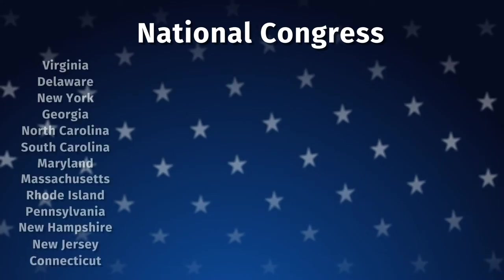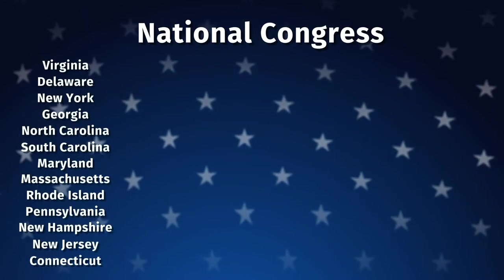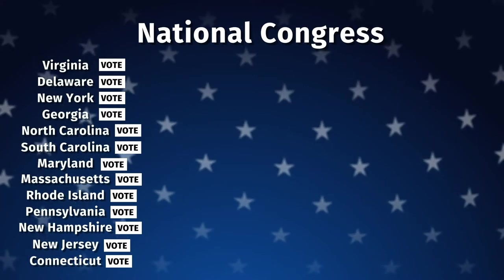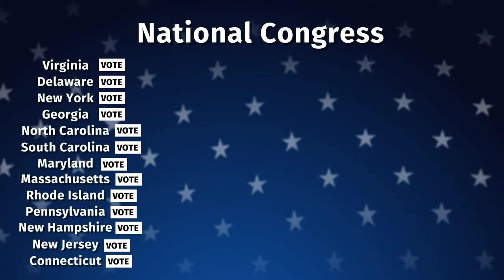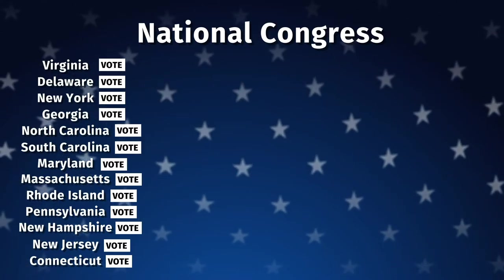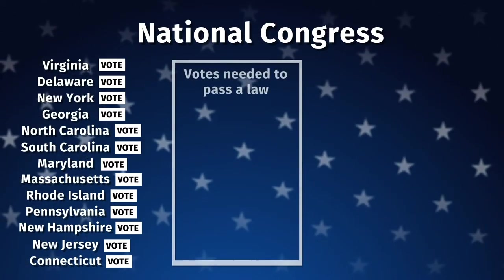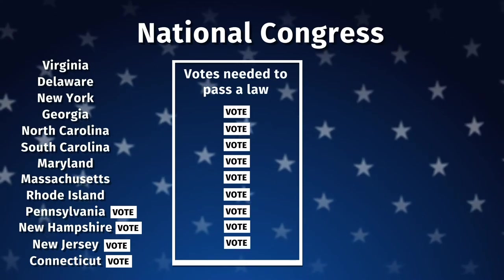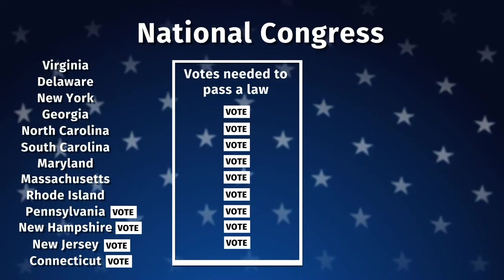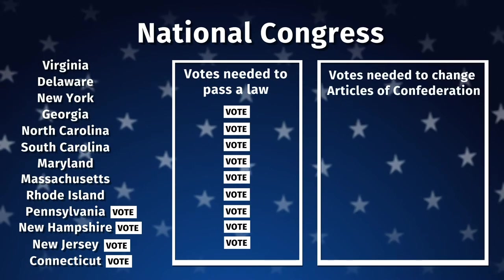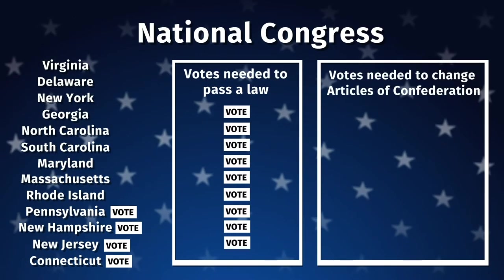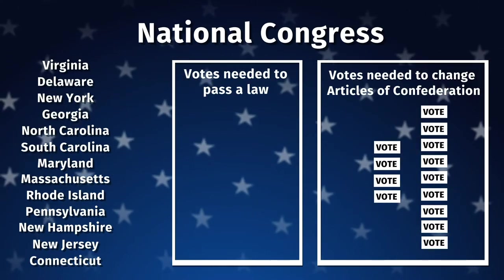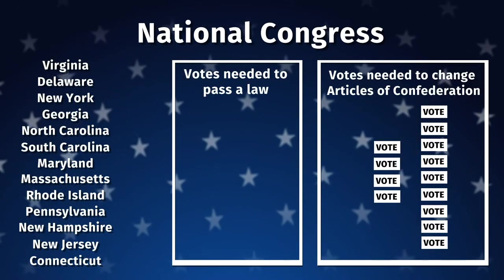Each state would elect members to Congress, but each state only got one vote, regardless of the state's population. In order to pass a law, nine of the 13 states had to agree. And to amend or change the Articles of Confederation, all 13 states needed to agree.